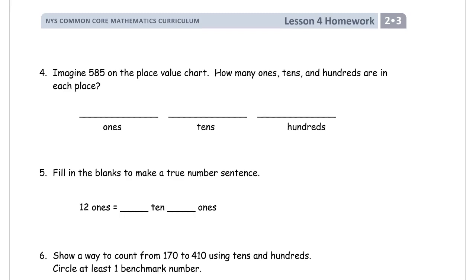Imagine five hundred and eighty-five on the place value chart. How many ones, tens, and hundreds are in each place? Well look at the number five hundred eighty-five and let's make a little HTO chart above it: hundreds, tens, and ones. So how many ones do we have? There's five ones, how many tens? There's eight tens, and there's five hundreds. It's kind of a backwards HTO chart but we got to watch the units here. I know we live in a left-to-right world and we're used to seeing five hundred eighty-five, but notice that they switch the ones in the hundreds. If you got it either way you're lucky because they're both fives so it works.